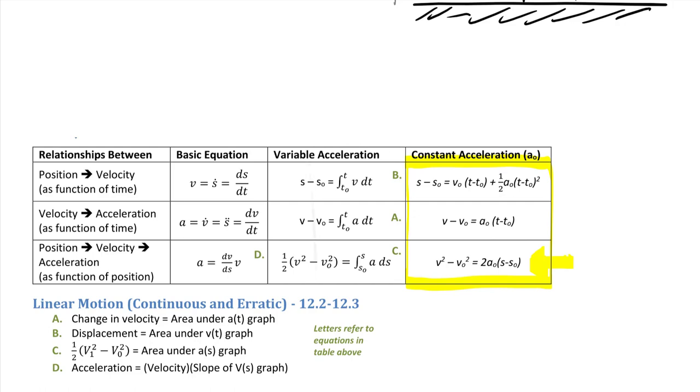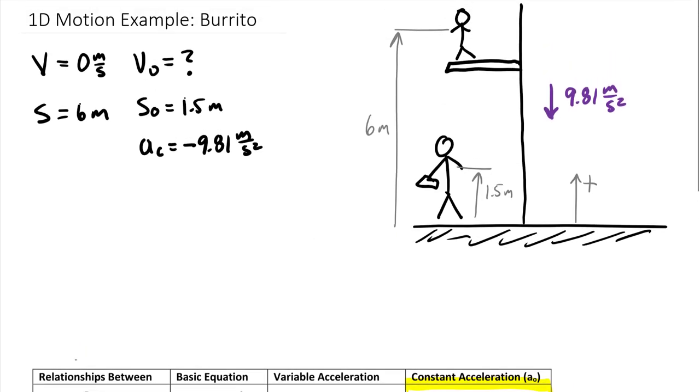Coming back up to our information, we can write this out and we have v squared minus v naught squared is equal to two times...